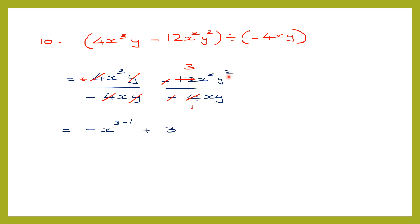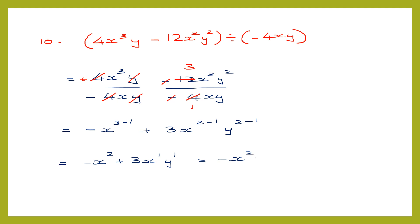For the second term: minus into minus cancels, giving plus. 12 divided by 4 is 3. Then x squared divided by x is x to the power of 2 minus 1, which is x. And y squared divided by y is y to the power of 2 minus 1, which is y. So the final answer is minus x squared plus 3xy, and option 3 is our answer.